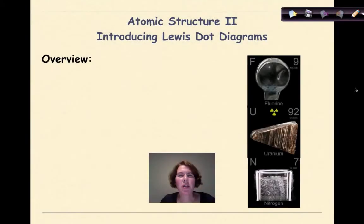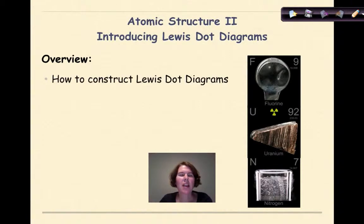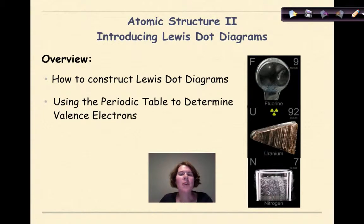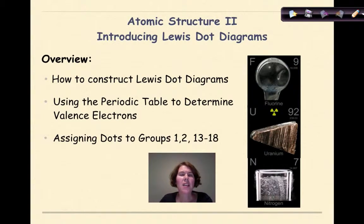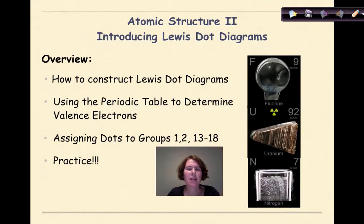Hi, welcome to Atomic Structure 2, Introducing Lewis Dot Diagrams. My name is Dr. English, and in this tutorial today, we are going to be looking at how to construct Lewis Dot Diagrams, using the periodic table to determine valence electrons, assigning the dots to groups 1, 2, 13 through 18, and then finally, at the end, a little bit of practice.